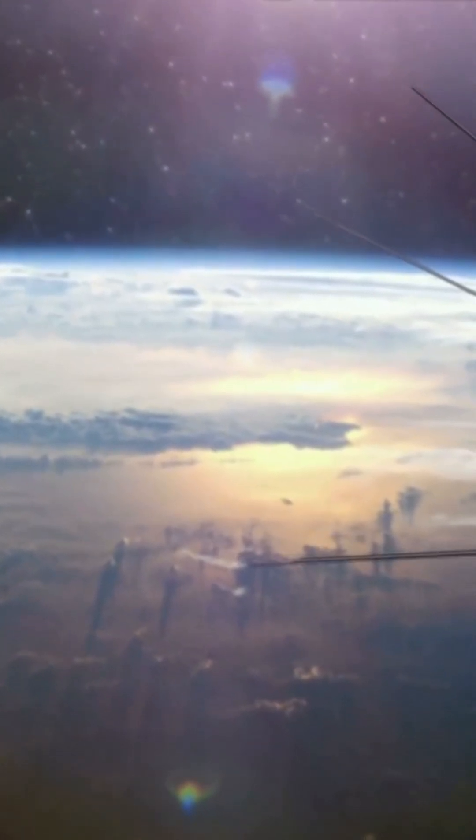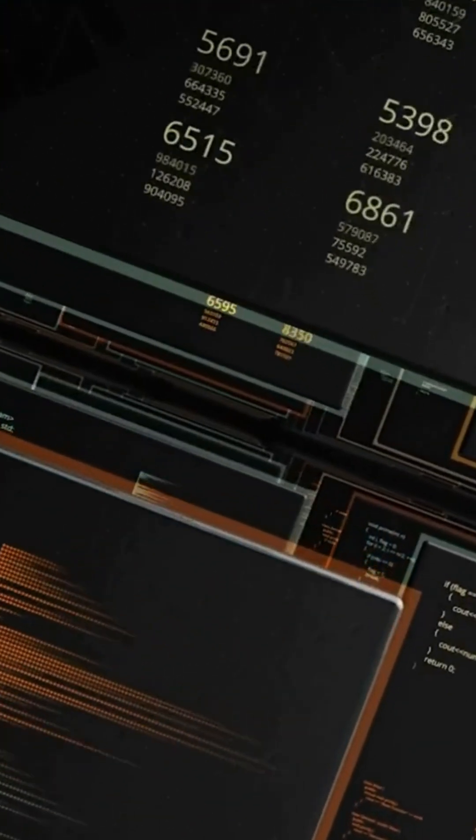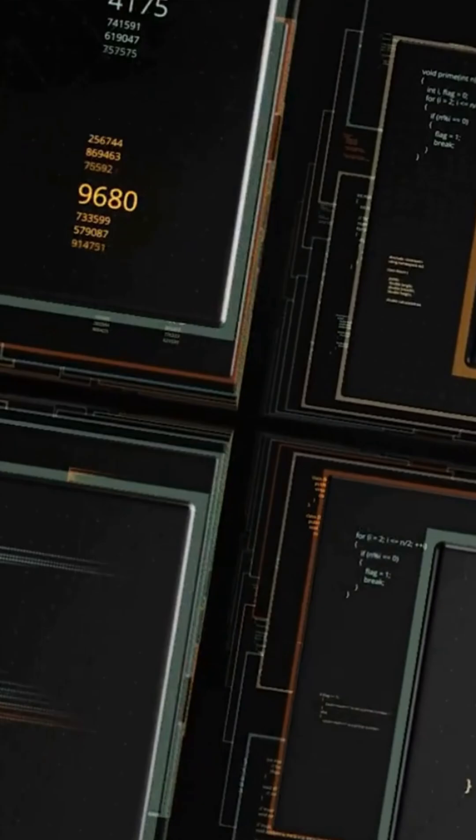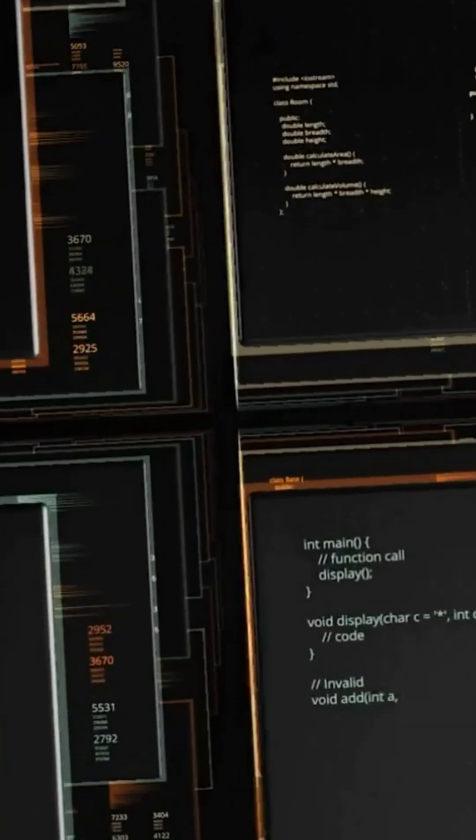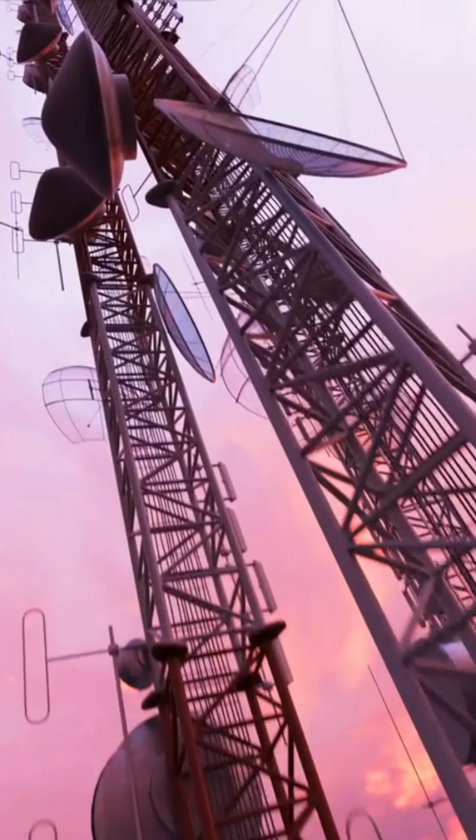Equipped with a simple radio transmitter, Sputnik 1 sent signals that provided invaluable data about the ionosphere and the Earth's shape. It tested technology in the harsh environment of space, proving that humanity could reach beyond our planet.